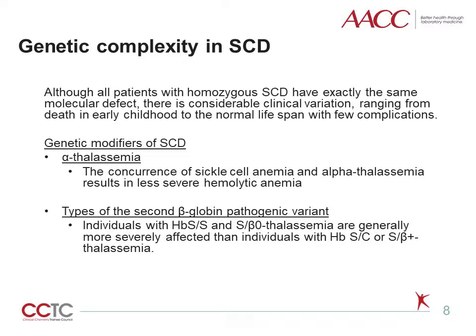Although all patients with homozygous SCD have exactly the same molecular defect, there is considerable clinical variation, ranging from death in early childhood to a normal lifespan with few complications. There are some genetic modifiers of sickle cell disease, including alpha-thalassemia, the type of the second beta-globin pathogenic variant, and genetic factors that affect levels of hemoglobin F. Alpha-thalassemia results from impaired production of alpha-globin chains, which leads to a relative excess of beta-globin chains. The concurrence of sickle cell anemia and alpha-thalassemia results in less severe hemolytic anemia, apparently as a result of reduced intracorpuscular concentration of hemoglobin S and its retarded polymerization.